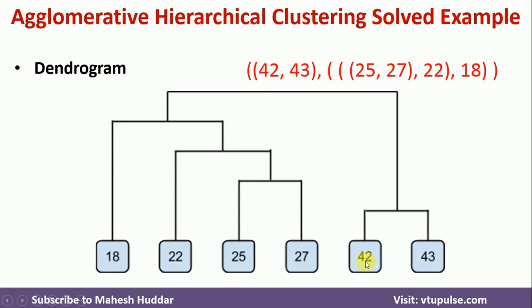The same result can be shown with the help of a dendrogram. First, we merged 42 and 43. After that, 25 and 27 were merged. The resulting cluster was merged with 22, and then that resulting cluster was merged with 18. Finally, the cluster {42, 43} and the entire other cluster are merged to get the final cluster. This is how we apply the Agglomerative Hierarchical Clustering algorithm to get the different clusters.